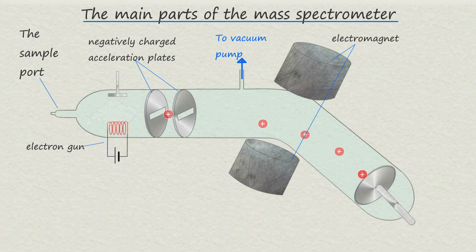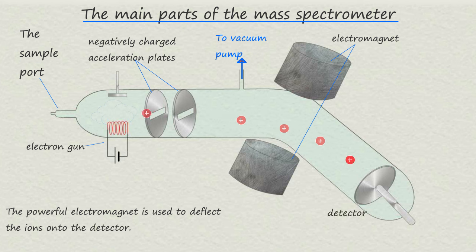Moving along the mass spectrometer the next component you will meet is a very powerful electromagnet. Now these electromagnets will produce a very strong magnetic field which will be used to deflect the positively charged metal ions onto the final part shown in the diagram which is the detector plate.